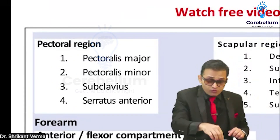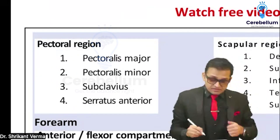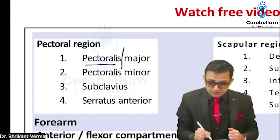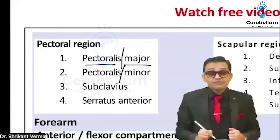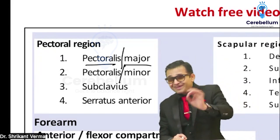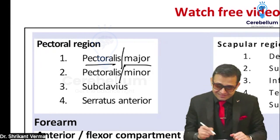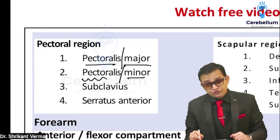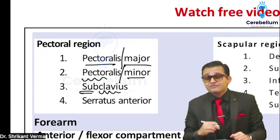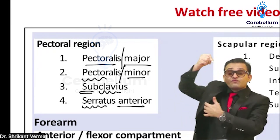Break the name and get the idea — pectoral region. There's one muscle: pectoral major. 'Major' means big, so it is a big muscle. Another muscle: pectoral minor — 'minor' means small. Sub means below, so subclavius is below the clavicle. It has a jig-jack appearance and is migrating to the front, anteriorly.